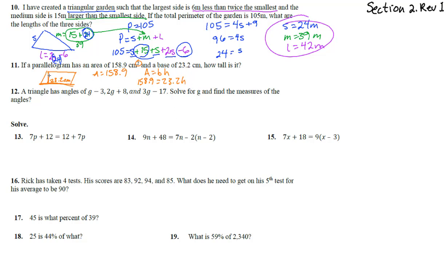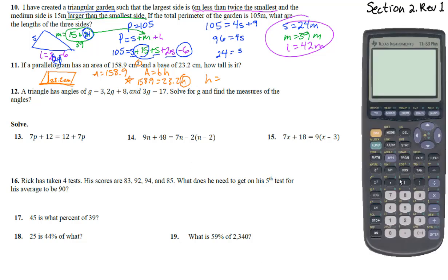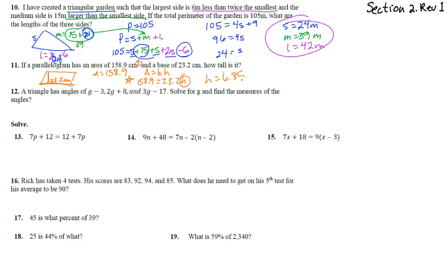Note that for a parallelogram we use the perpendicular height, not the slant side. This equation has just one step: divide both sides by 23.2. Using a calculator, 158.9 divided by 23.2 gives h equals 6.85 centimeters.